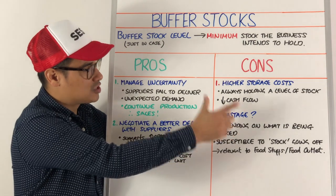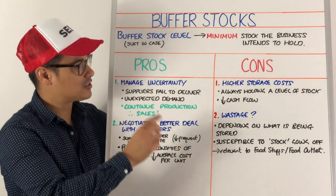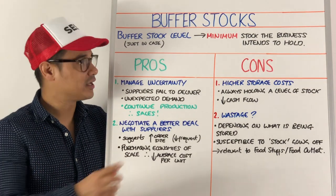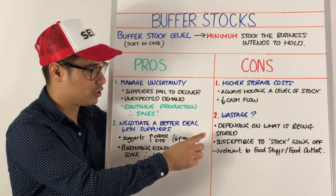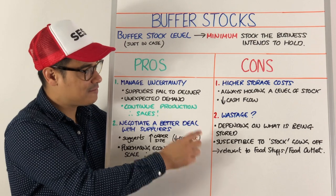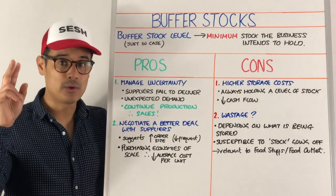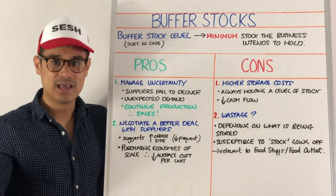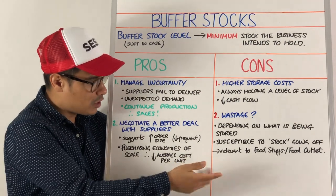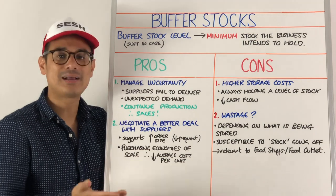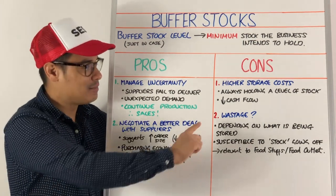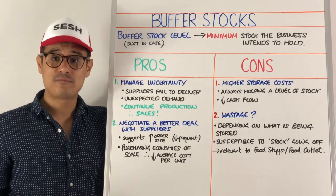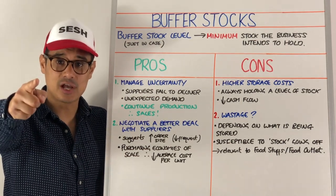A second possible disadvantage of buffer stocks is wastage, but it really depends on what stock you're holding. You've got to question that, because if that stock is susceptible to going off — probably because it's some form of foodstuff, maybe it's a restaurant or food outlet — then it could become obsolete, meaning it's just wasted. So you really have to question that.